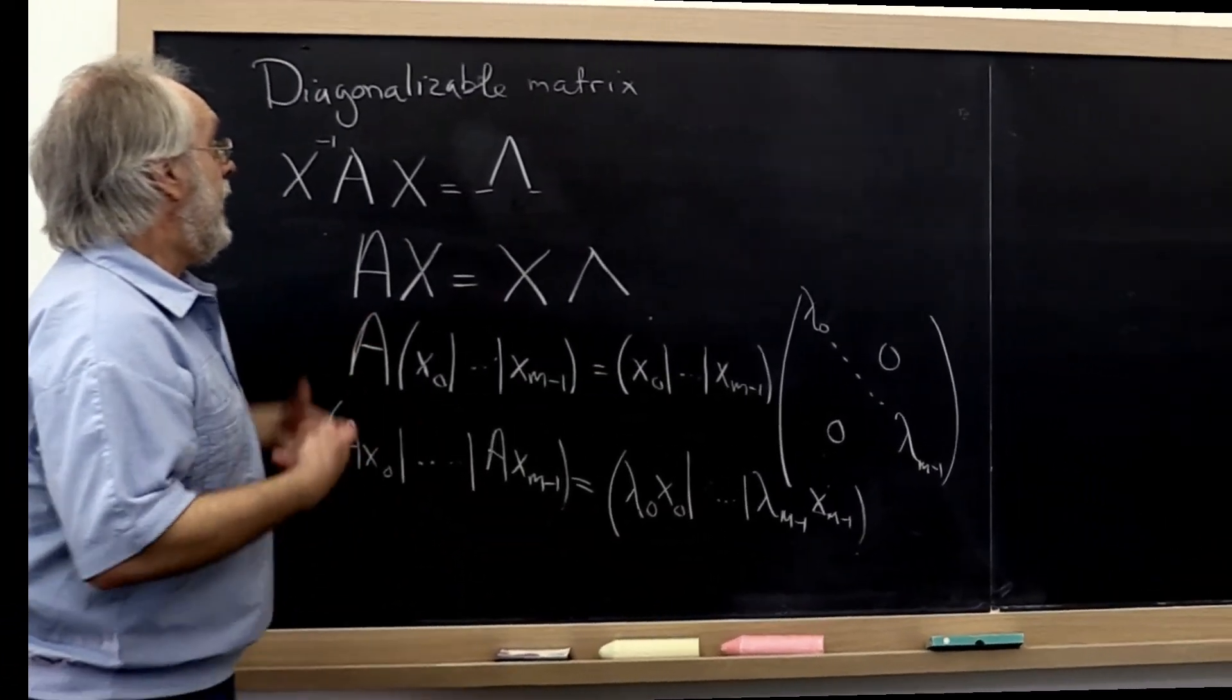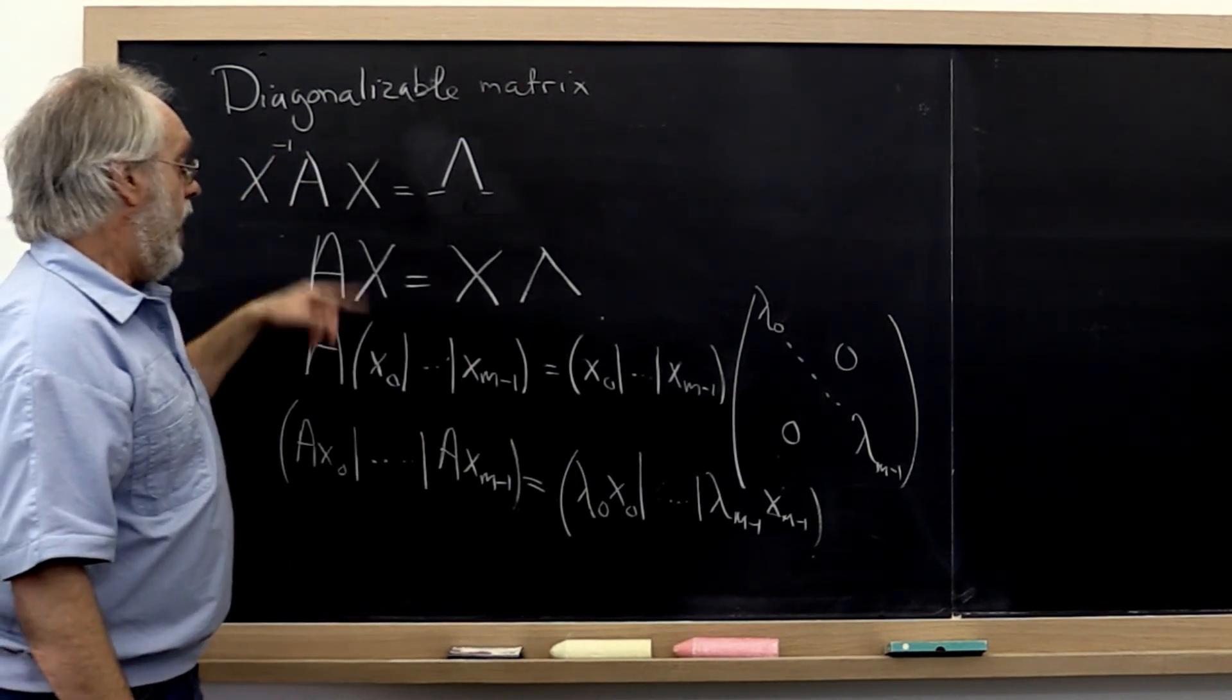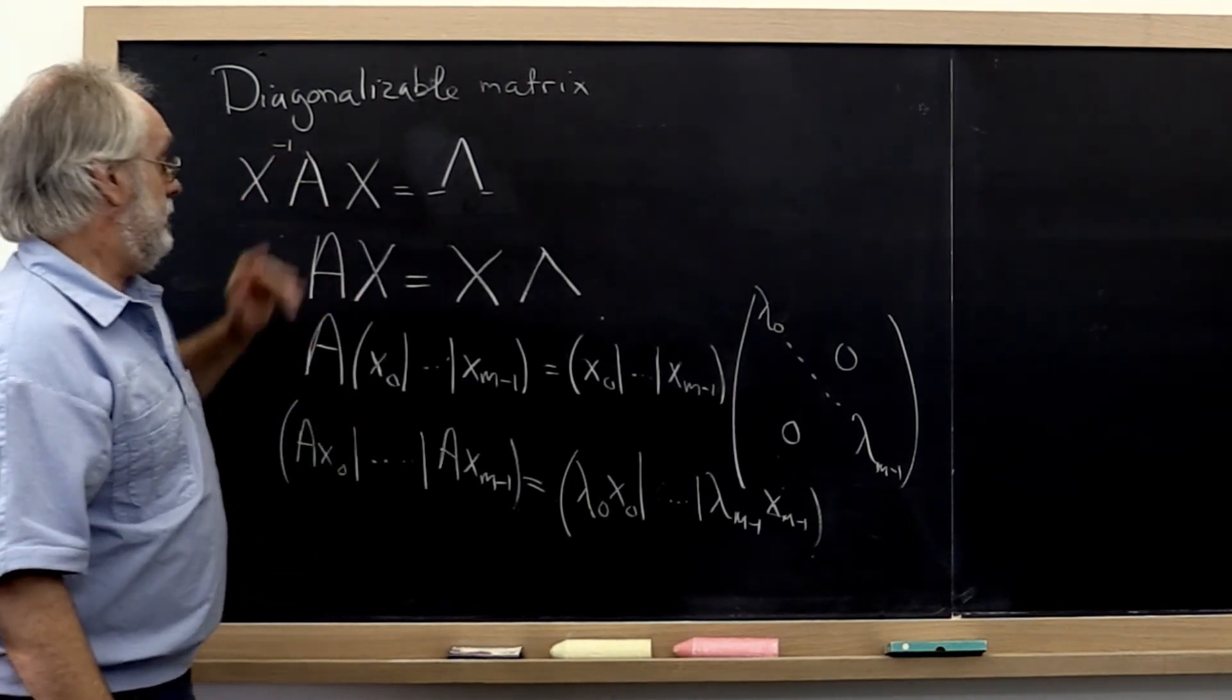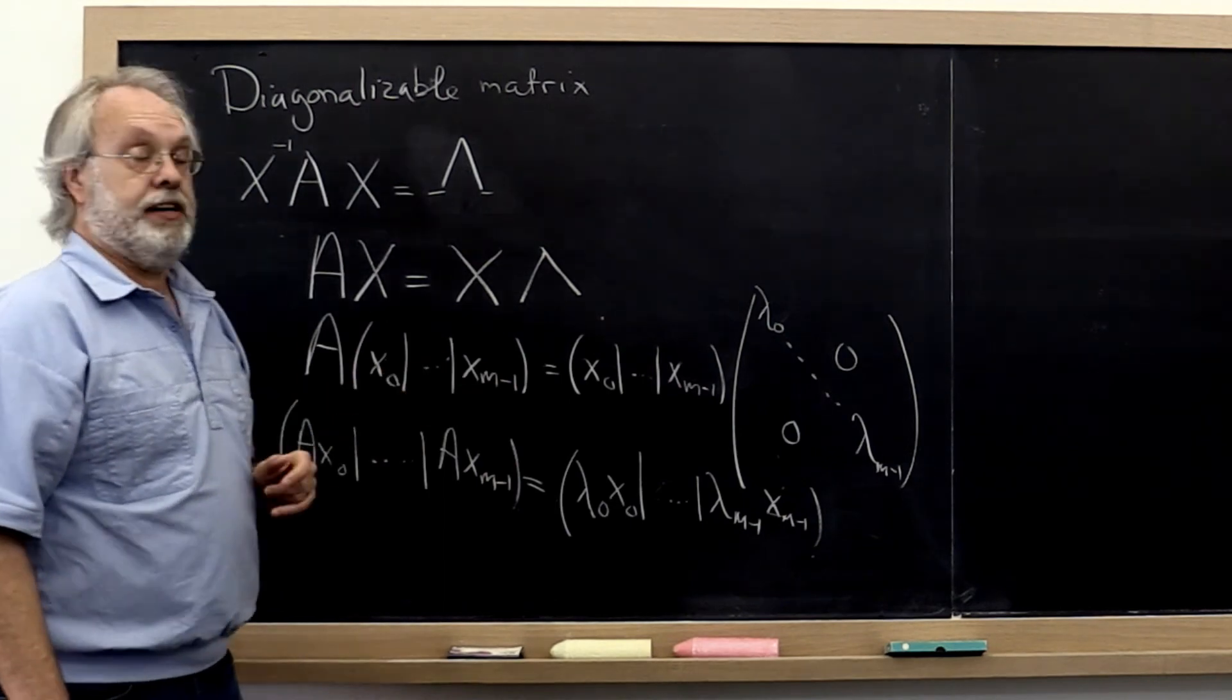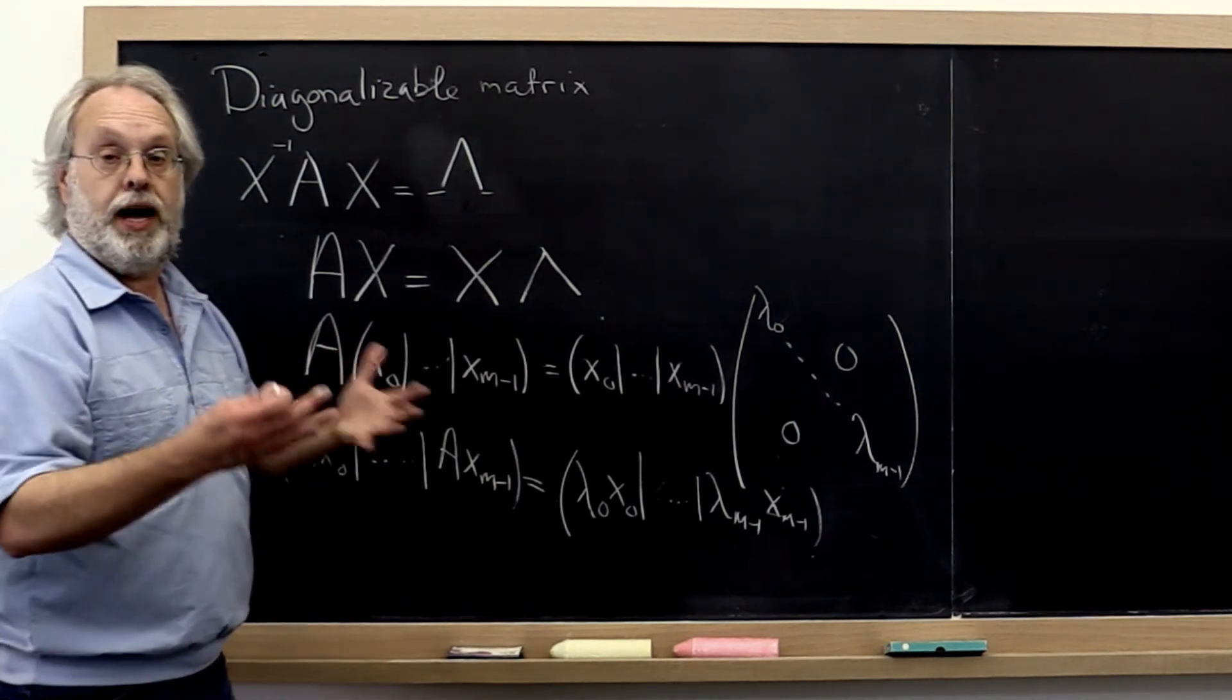And if we have a matrix X that diagonalizes the matrix A, then we can look at its columns and find the eigenvectors of our matrix. So the two go hand in hand.